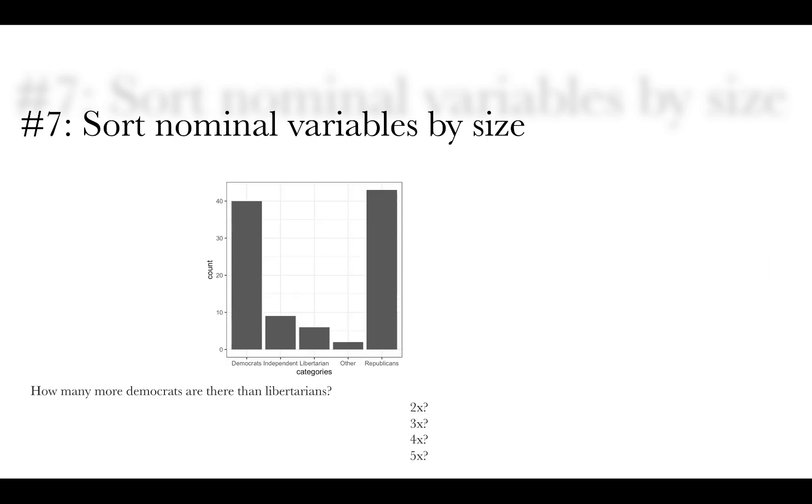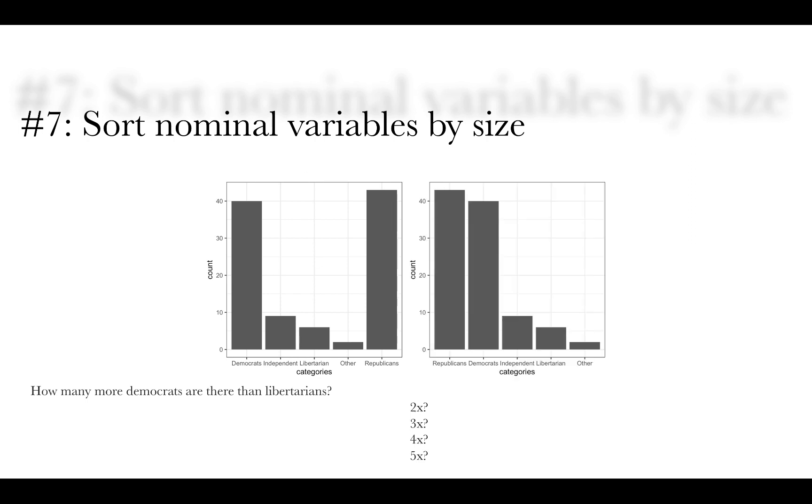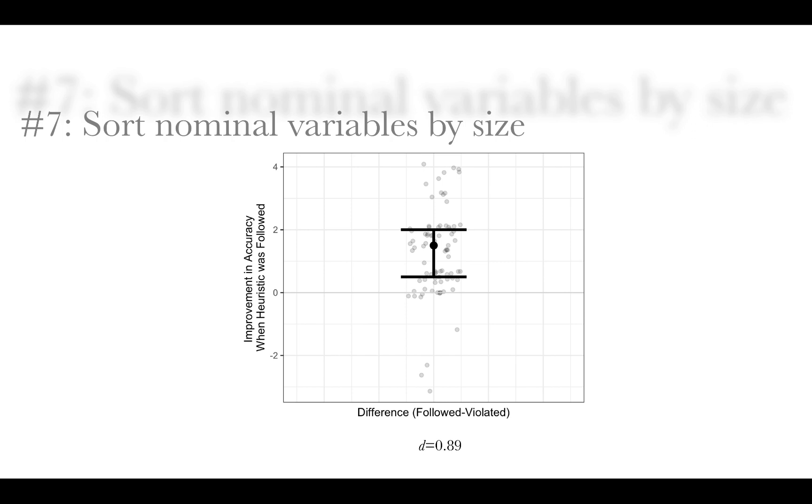And so this is a heuristic that we tested where we asked students based on this graph, how many more Democrats are there than Libertarians? Is it two times, three times, four times, or five times? And it's kind of hard to do. And by the way, we also told participants that you are being timed. So we showed them the graphic on the left, but we also showed them the graphic on the right. Of course, we changed the categories so we don't have practice effects or anything like that.